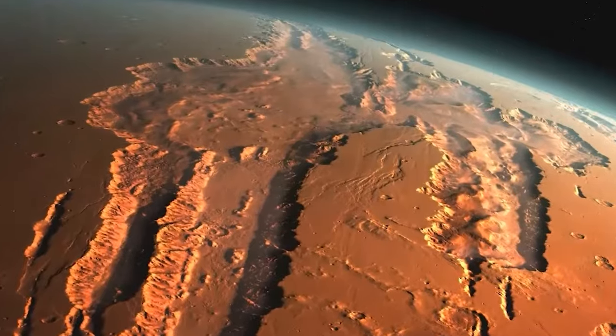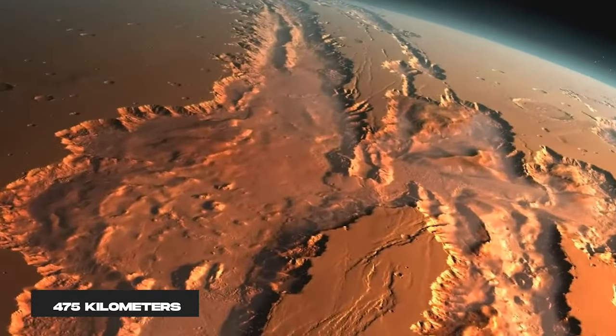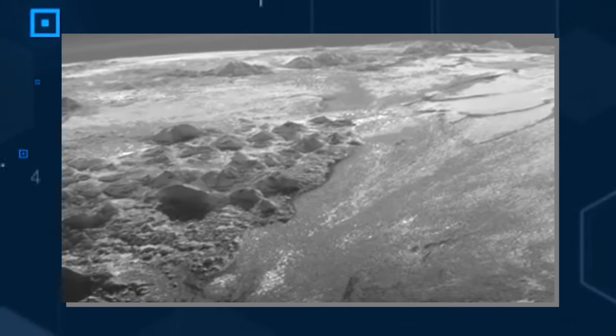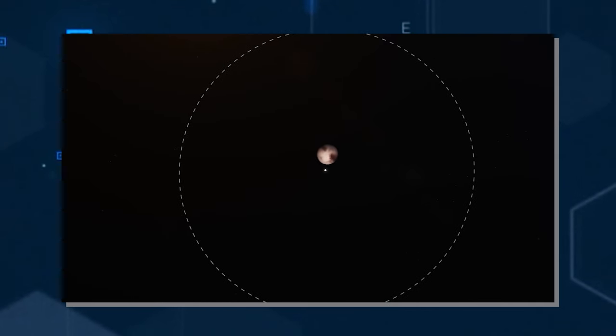Further north, near the pole itself, we encounter the enormous Mordor Macula, boasting a diameter of 475 kilometers. Its origin remains a subject of debate. According to the prevailing hypothesis, nitrogen and methane from Pluto's atmosphere were captured by Charon's gravity and subsequently settled at its poles.